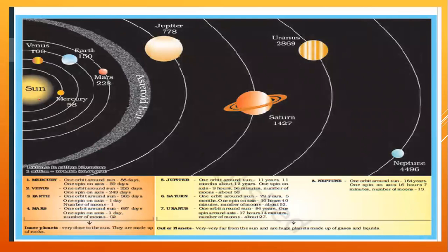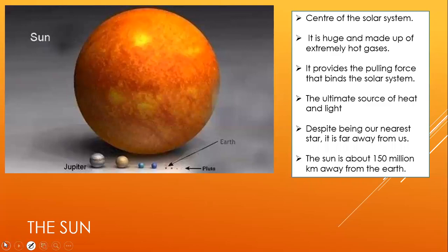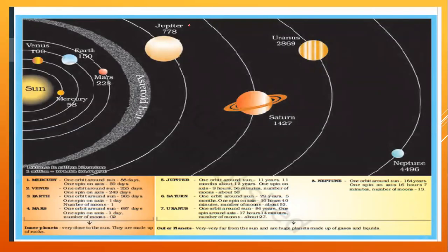In the solar system you can see: this is the sun — Mercury, Venus, Earth, Mars, Jupiter, Saturn, Uranus, Neptune. These are the planets. In our solar system there is one sun and eight planets. That is all for today. Attend the class at 1 pm. Thank you, have a nice day.